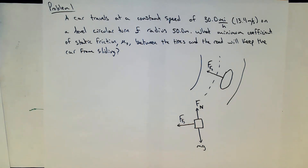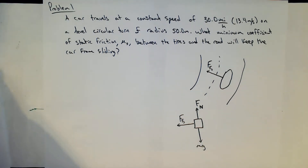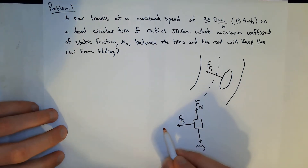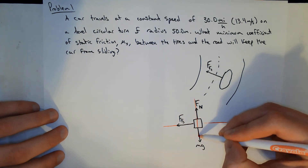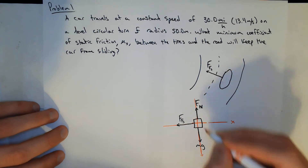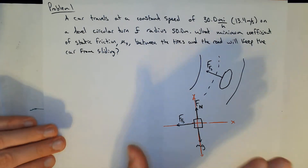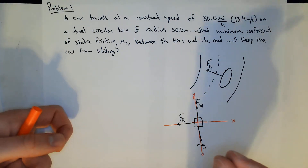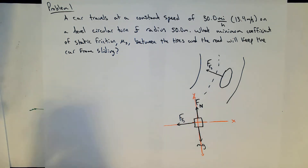Step two is to choose a coordinate system. It's straightforward here to define the x-axis horizontally and the y-axis vertically through the object. Later we'll see problems where things are tilted, and just like with ramps we'll have to tilt our coordinate axes and decide which vectors need to be decomposed.